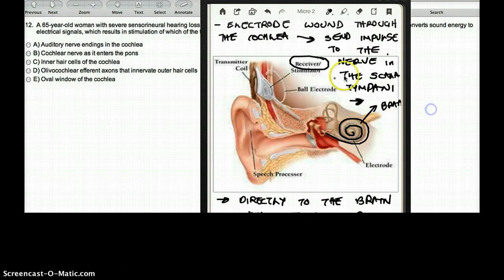So this is what I have written here, that the electrode wound through the cochlea sends impulse to the nerve in the scala tympani, directly to the brain, and through the auditory system. So that's how a cochlear implant works. It takes information to the cochlea and from the cochlea to the brain.